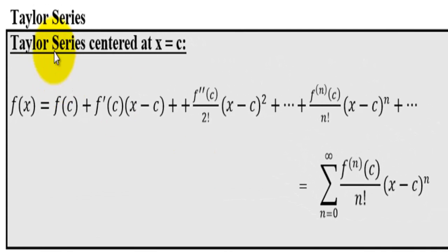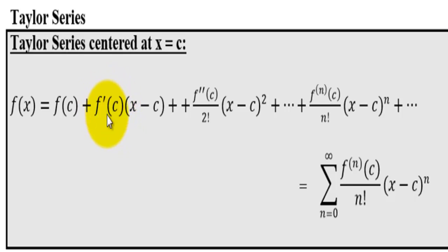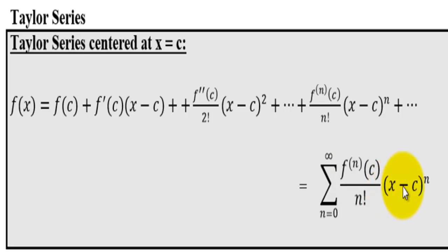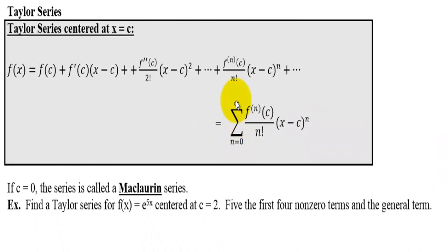Taylor series centered at x equals c. f of x is equal to f of c — the function evaluated at c — plus the derivative evaluated at c times x minus c, plus the second derivative over 2 factorial times x minus c squared, and then the nth derivative over n factorial times x minus c to the n. We can summarize this in summation notation as the nth derivative over n factorial times x minus c to the n, from n equals 0 to infinity.